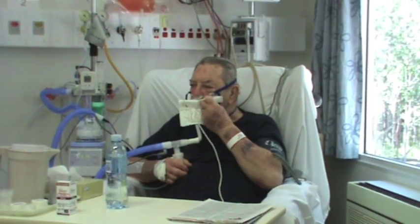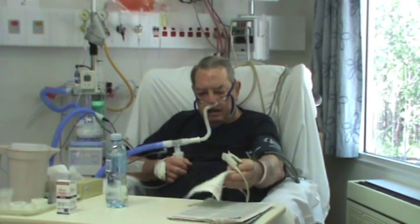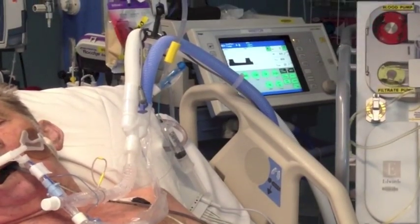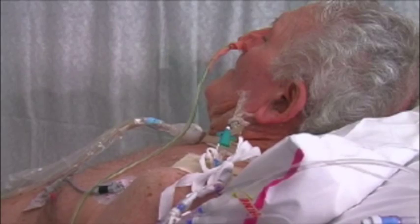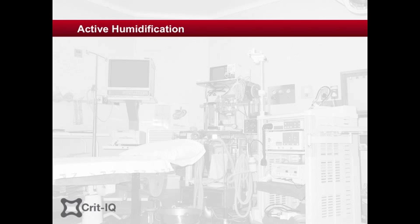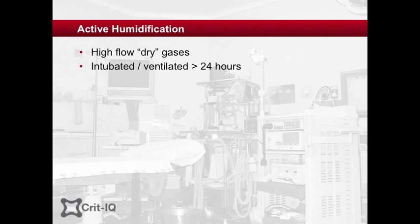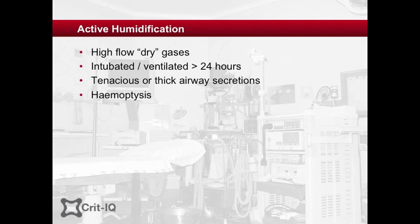Active humidification can be applied to spontaneously breathing patients through face masks and nasal prongs, through to intubated mechanically ventilated patients and patients with tracheostomies. Active humidification is recommended in patients who require high-flow supplemental oxygen greater than 4 litres a minute, in patients who are intubated and tracheostomised for more than a few days, patients with thick or tenacious sputum or haemoptysis, and patients who are hypothermic or dehydrated and those managed with a negative fluid balance, for example in neurosurgical patients.